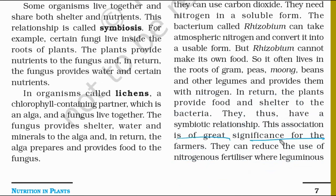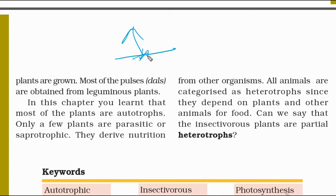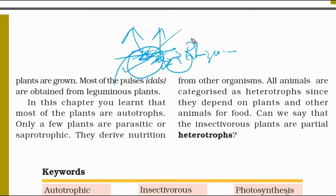This association is of great significance for farmers — they can reduce the use of nitrogen fertilizers where leguminous plants are grown. Most pulses are obtained from leguminous plants. Using crop rotation — for example, growing rice followed by legumes — helps maintain soil fertility, as rhizobium bacteria in the roots of legumes replenish the nitrogen in the soil.